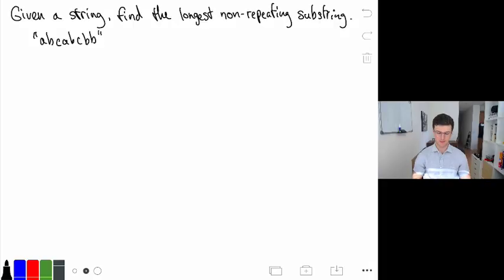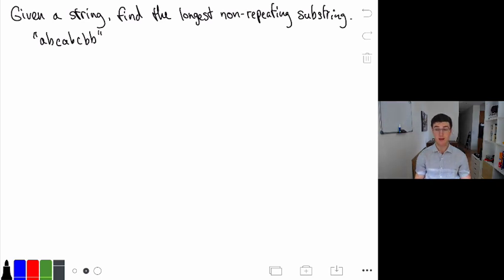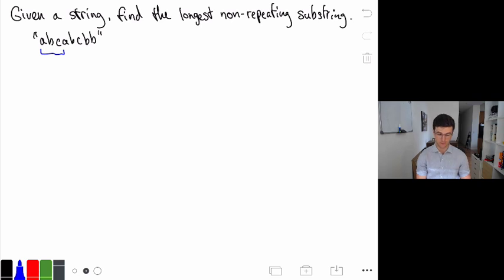So in this problem we are finding the length of the longest common substring in a string. We have this example here where we have a, b, c, a, b, c, b, b. There are a couple of different options that would be valid. We could look at a, b, c as a valid substring, but if we continue on and include this next a, all of a sudden we have two repeated a's.